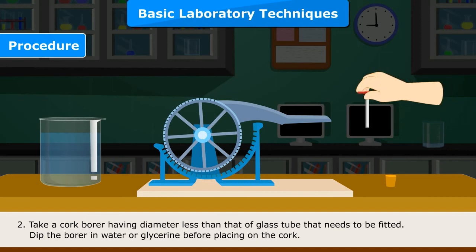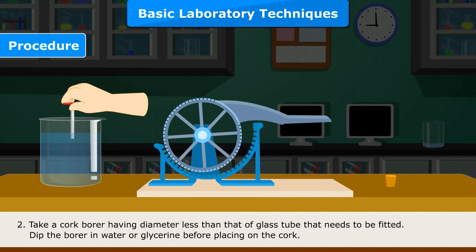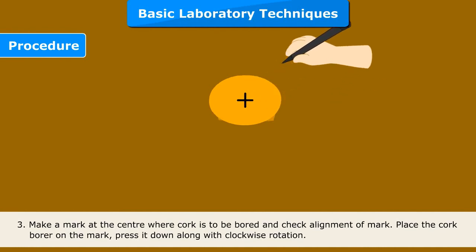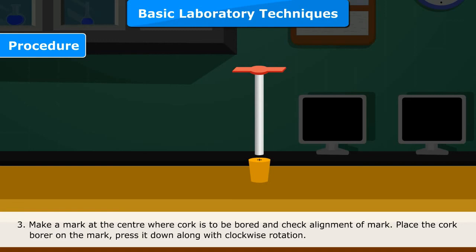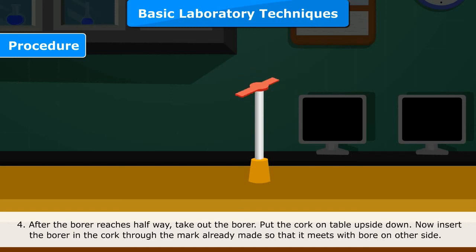Take a cork borer having diameter less than that of the glass tube that needs to be fitted. Dip the borer in water or glycerin before placing it on the cork. Make a mark at the center where the cork is to be bored and check alignment of the mark. Place the cork borer on the mark and press it down with a clockwise rotation. After the borer reaches halfway, take out the borer. Put the cork on the table upside down and insert the borer through the mark already made so that it meets the bore on the other side.